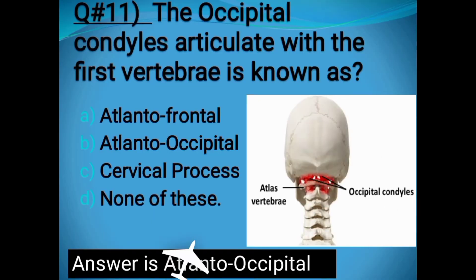Question number eleven: The occipital condyle articulates with the first vertebra — this joint is known as: Atlanto-axial, Atlanto-occipital, Cervical process, or None of these. The correct answer is Atlanto-occipital.